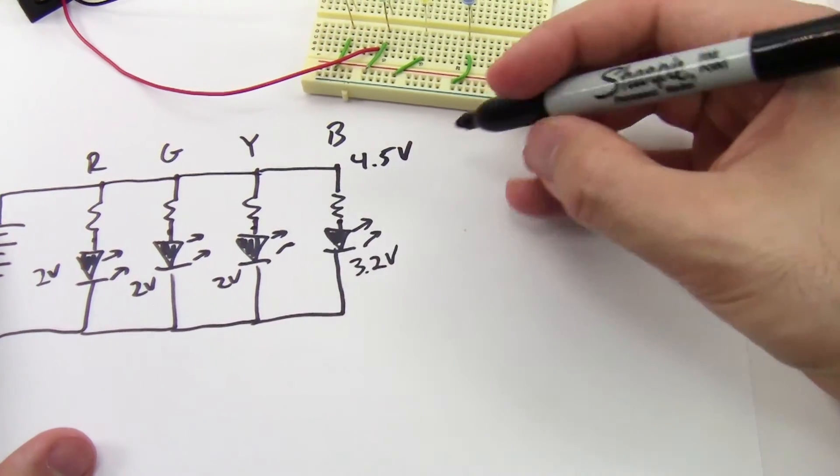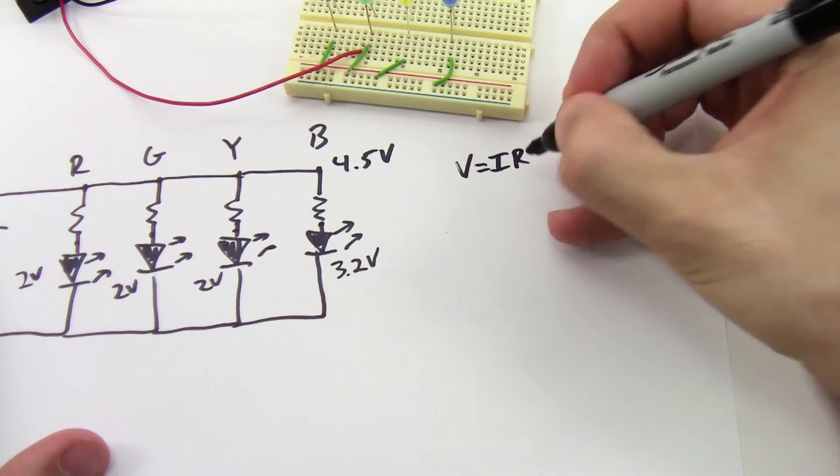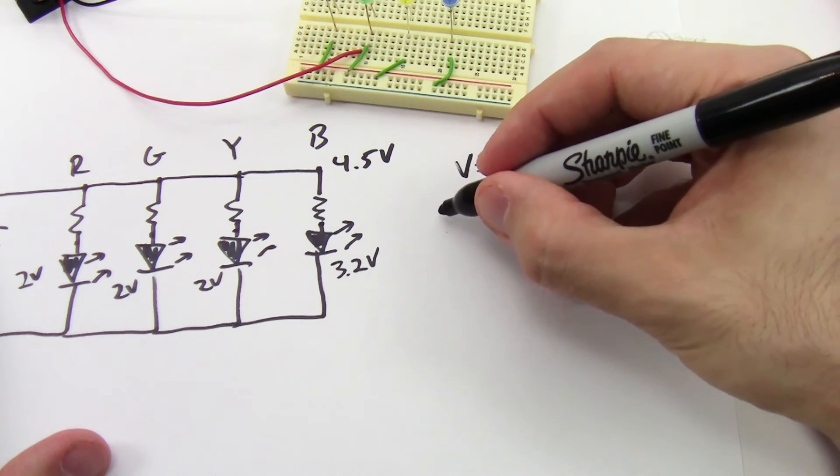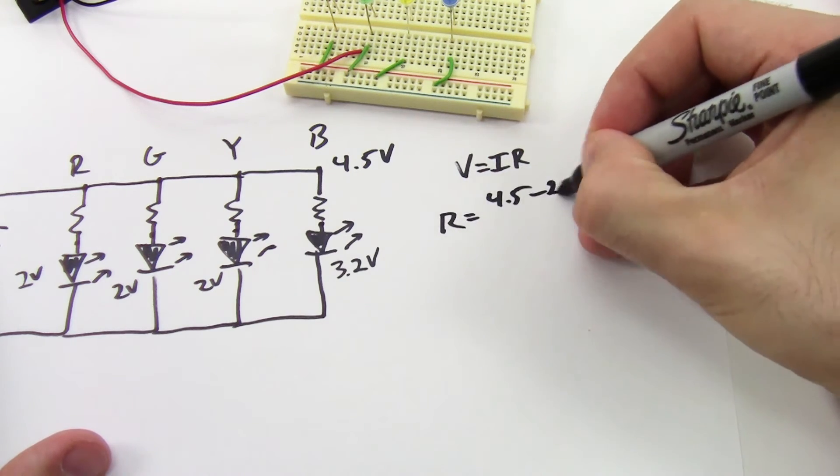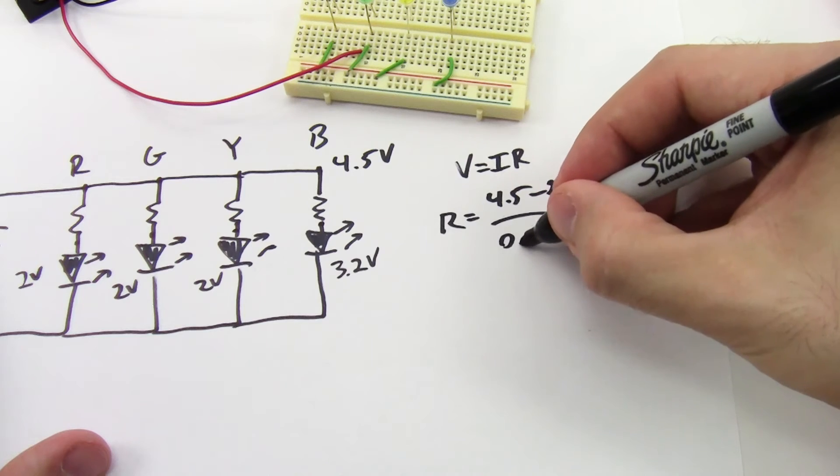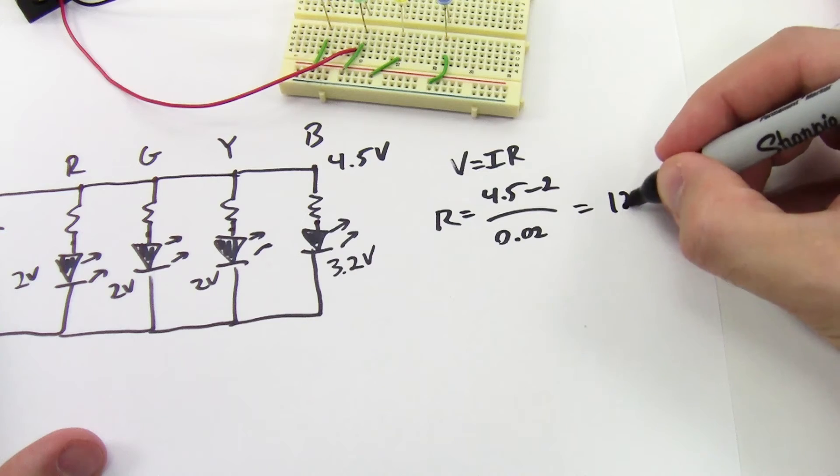So for the red, green, and yellow LEDs, I have a similar calculation to what I had before where I started with Ohm's Law. I rearrange to solve for the required resistor value. R equals 4.5 minus 2 over 0.02 amps, and that's going to give me 125 ohms in this case.